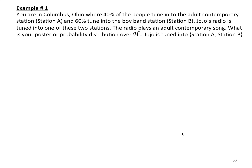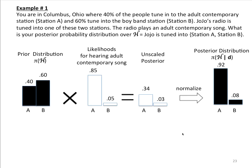What is your posterior probability distribution? Latin H contains the two hypotheses: either JoJo is tuned into station A or tuned into station B. Here is the overall flow of what you do — go from your priors, combine information about likelihoods to get an unscaled posterior, and then normalize to get your properly scaled posterior probability distribution. The steps are actually very simple and intuitive, so let's go through them.